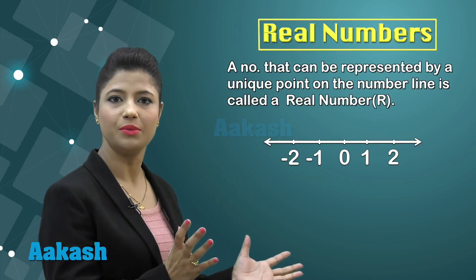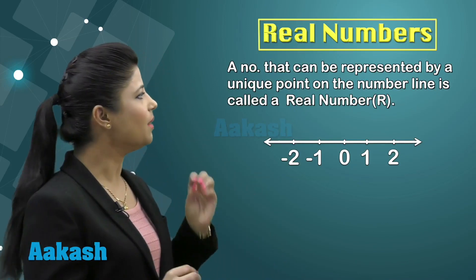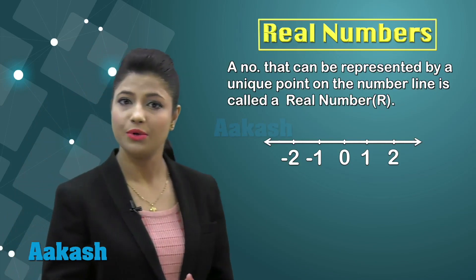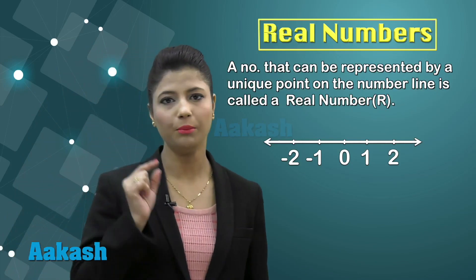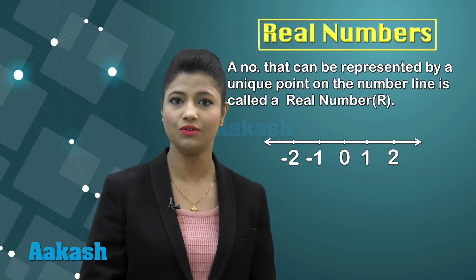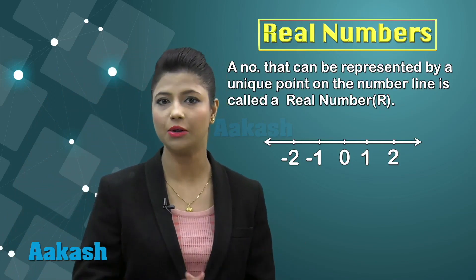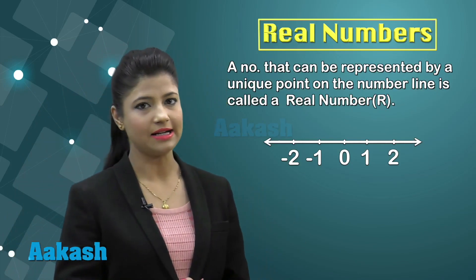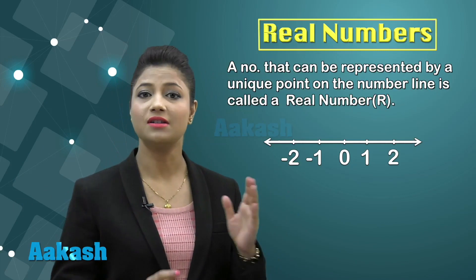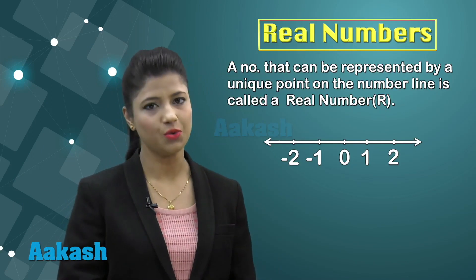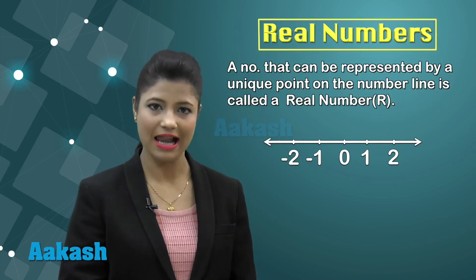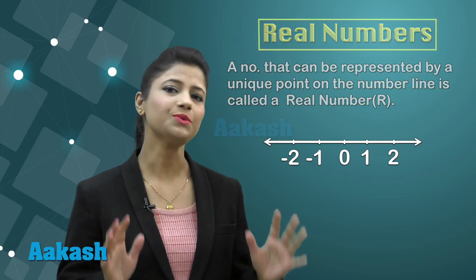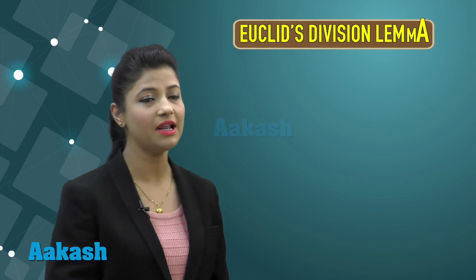There is one more property related to real numbers: the square of a real number is always positive. Talking about real numbers, we have two important properties you will be learning today — Euclid's division lemma and Euclid's division algorithm.